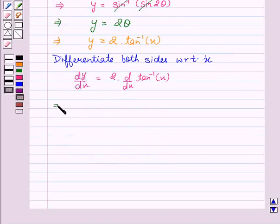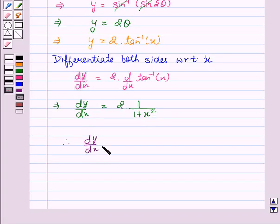This implies dy by dx equals 2 into 1 upon 1 plus x squared. Therefore, dy by dx equals 2 upon 1 plus x squared, which is the required solution.